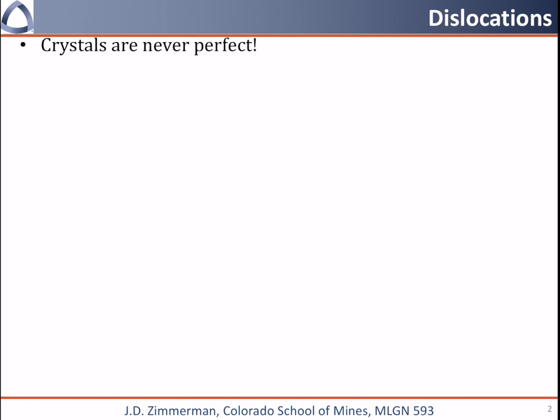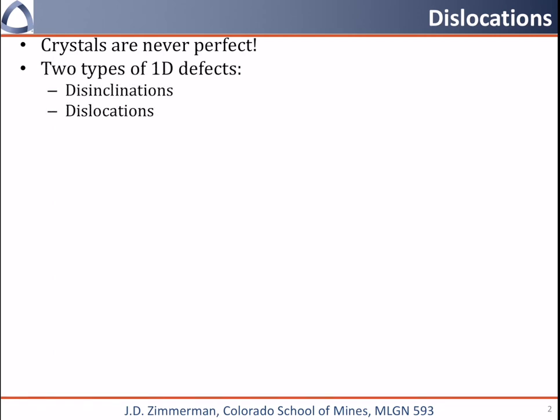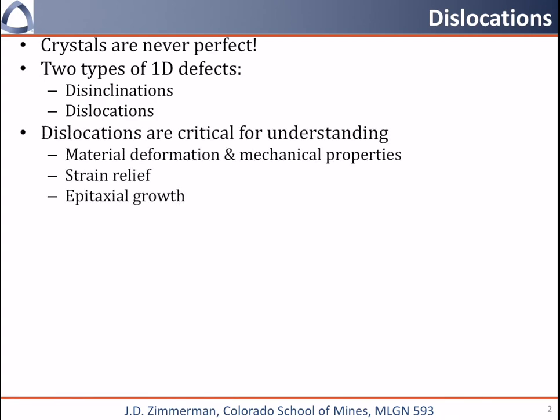The reason we're talking about these is crystals are never perfect. There are two types of one-dimensional defects: disinclinations, which show up in liquid crystal materials, and the topic of today's discussion — dislocations. We have to understand dislocations because they're critical for understanding mechanical properties, how you get plastic deformation of crystalline materials, how they allow for relieving strain, and their importance in epitaxial growth and defects that harm semiconductors.